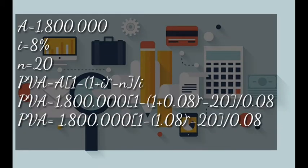When we add what is in the brackets, 1 plus 0.08 gives us 1.08. So present value of annuity equals 1,800,000 times bracket 1 minus bracket 1.08 to the power negative 20, all divided by 0.08.